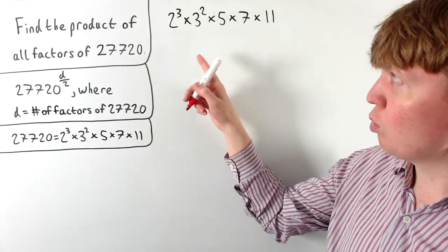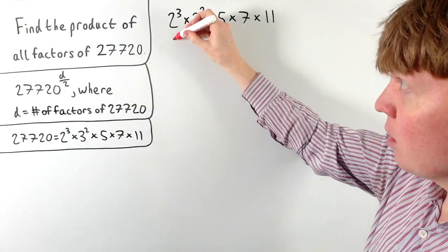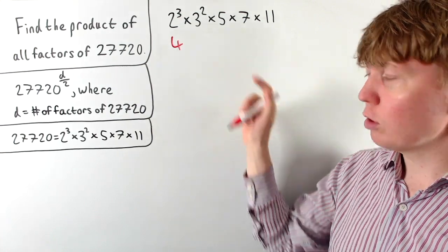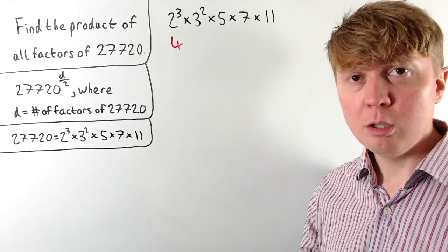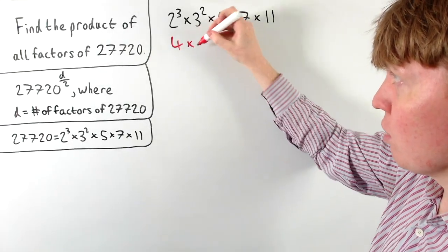2 2s, or we could have 3 2s if it's going to be a multiple of 8. So this gives us a total of 4 options so far. Then for each of these, we've got the choice of do we include a 3, do we include 2 3s, or do we not include any 3s? So we've got another 3 options for each of these.